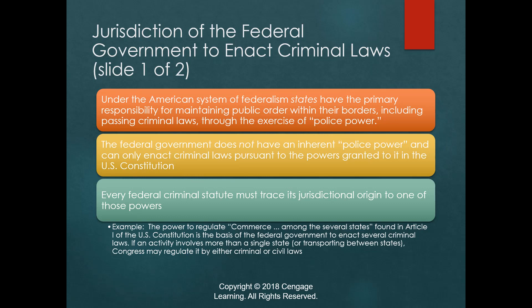Since almost everything relates to commerce, the federal government can extend its reach broadly. There are two broad constitutional interpretations: strict constructionalists say the federal government only has authority specifically granted in the Constitution; living constitutionalists believe the Constitution is a living, changing document that has expanded significantly in the 20th century. In the 21st century, the federal government can regulate and create criminal law in almost any area, with only a little restriction.